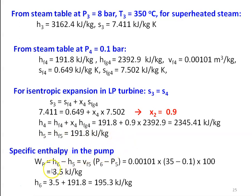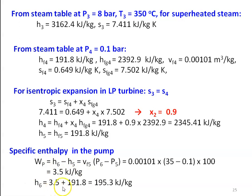Pump work: Wp = H6 − H5 = Vf × (P6 − P5) = 0.00101 × (35 − 0.1) × 100 = 3.5 kJ/kg. So H6 = 3.5 + 191.8 = 195.3 kJ/kg. All enthalpies H1, H2, H3, H4, H5, H6 are now calculated.